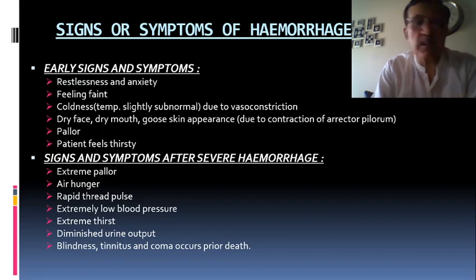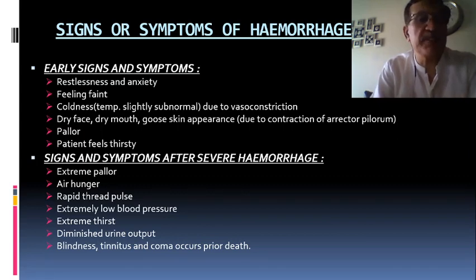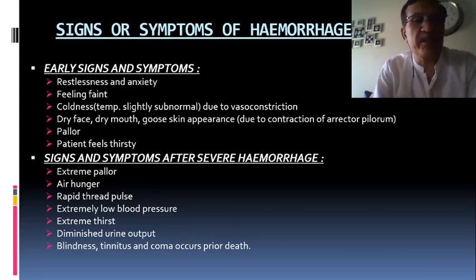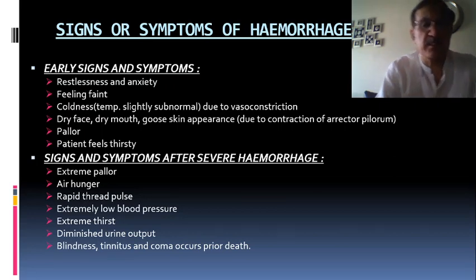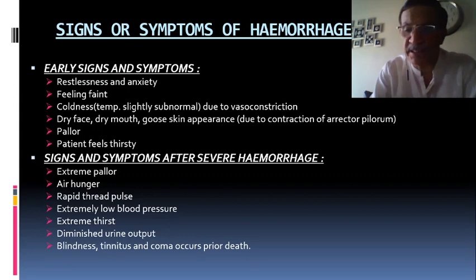After severe hemorrhage, there will be extreme pallor, air hunger, rapid thready pulse, extremely low blood pressure, extreme thirst, diminished urine output, and ultimately blindness, tinnitus, and coma occurring prior to death.